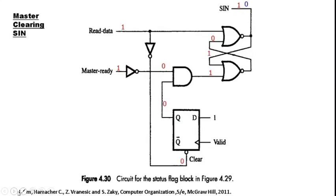Finally, master clearing SIN: the master will clear SIN when it is performing a read operation. Master detected that SIN was 1, so now master asserts master ready as 1 and issues a read. This combination — master ready 1 and read data 1 — clears this flip-flop, setting its output to 0, which resets SIN to 0. That is how the master clears SIN after reading data from the keyboard.